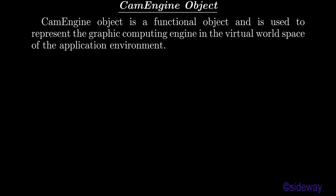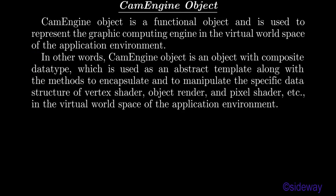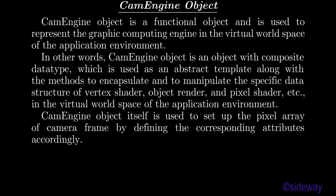CamEngine object is a functional object used to represent the graphic computing engine in the virtual world space of the application environment. It is an object with composite data type, used as an abstract template along with the methods to encapsulate and manipulate the specific data structure of vertex shader, object render, and pixel shader, etc. CamEngine object itself is used to set up the pixel array of the camera frame by defining the corresponding attributes accordingly.